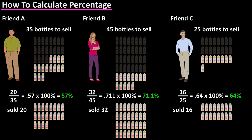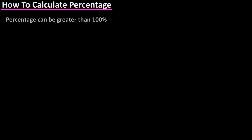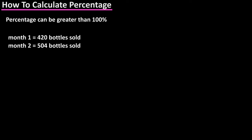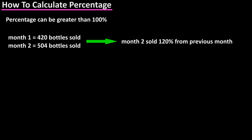So based on the percentages, Friend B is your best salesperson, followed by Friend C and then Friend A. Percentage can in some situations be greater than 100 percent. For instance, let's say that your sales crew sold a total of 420 bottles over a one month period. The next month they step their game up and sell a total of 504 bottles.